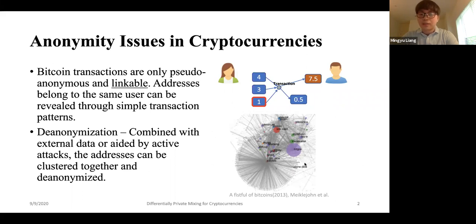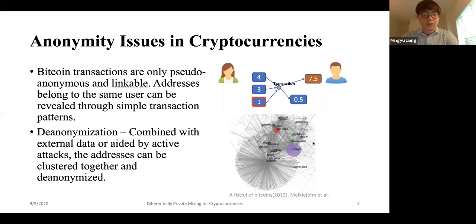One example: back in 2013, Mocko John published a paper showing that this technique can be used to de-anonymize many large surveys of Bitcoin users.